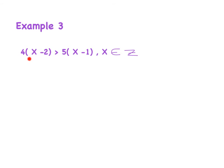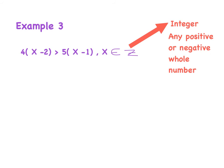Our final example: solve the inequality and show the solution on a number line. We have 4 bracket x minus 2 is greater than 5 bracket x minus 1, and x is an element of ℤ, the integers — any positive or negative whole number. I begin by expanding the brackets: 4 times x gives 4x, and 4 times minus 2 gives minus 8. On the right, 5 times x gives 5x.